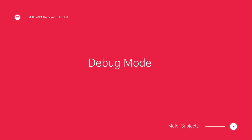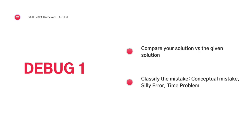Let's say even after that you are not able to solve it — that's when you should be concerned and go into debug mode. First, compare your solution versus the given solution and classify the mistake. If you got it completely wrong, it could be a conceptual mistake. Or sometimes you might have done a calculation error or misread the data — that goes into silly error. Or if you took more time to solve it, it is because of lack of concept. If it is a silly error, it is not necessarily your weak topic — that requires improving your overall level to avoid such mistakes, which I will cover in a separate video. Here we will focus on what if you made a conceptual mistake.